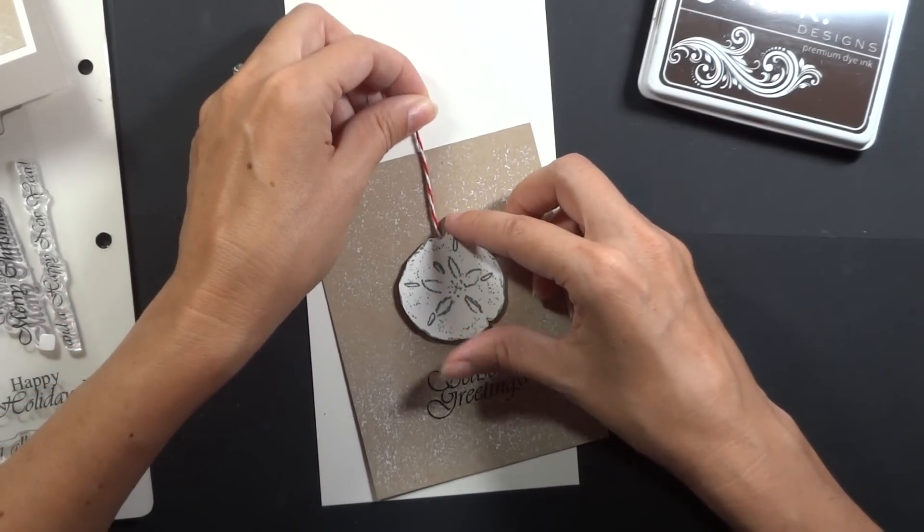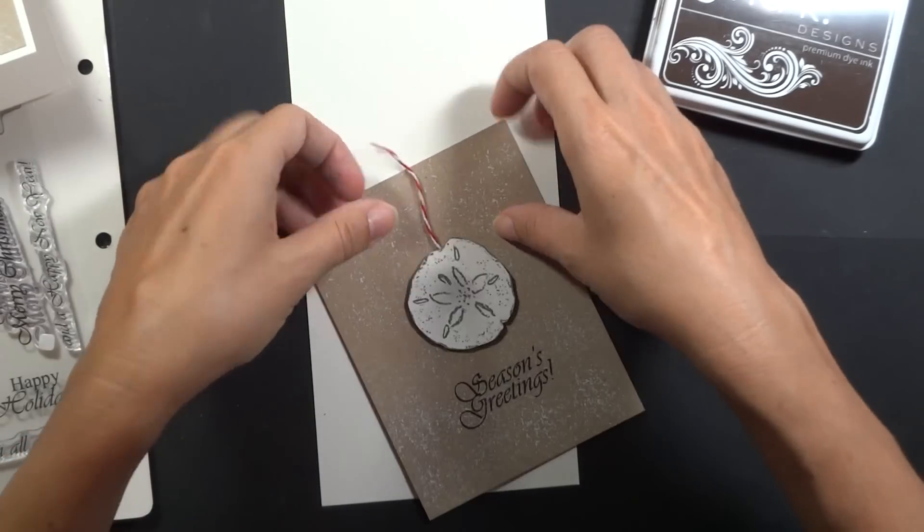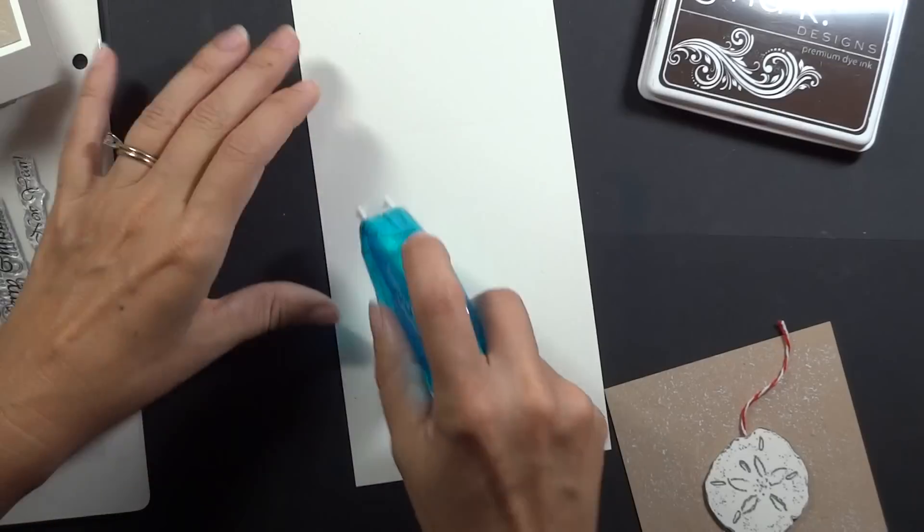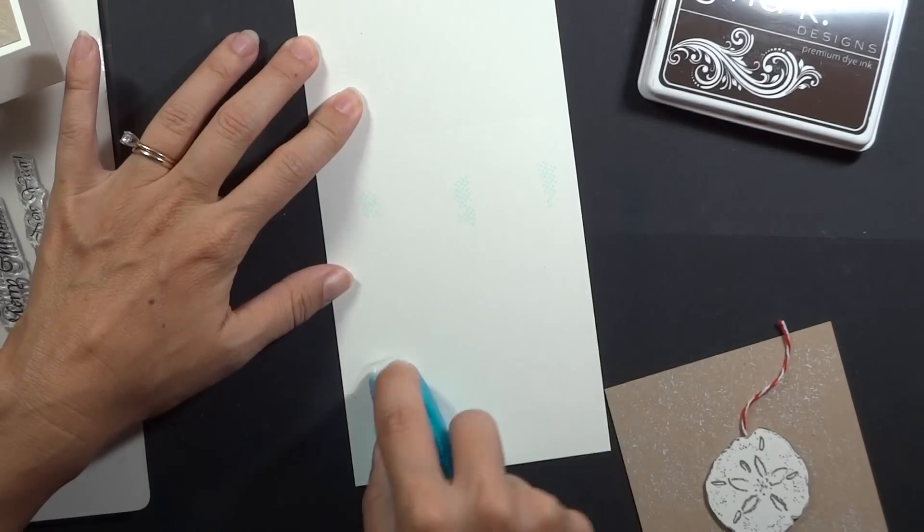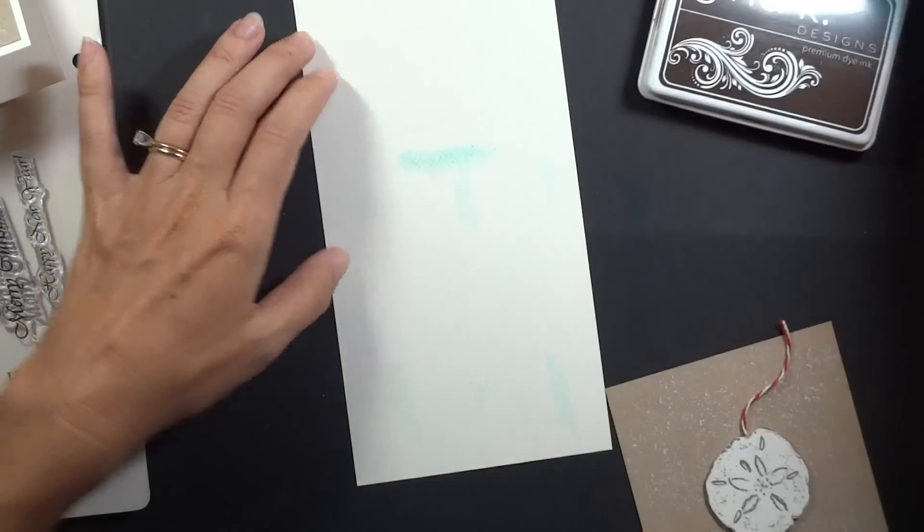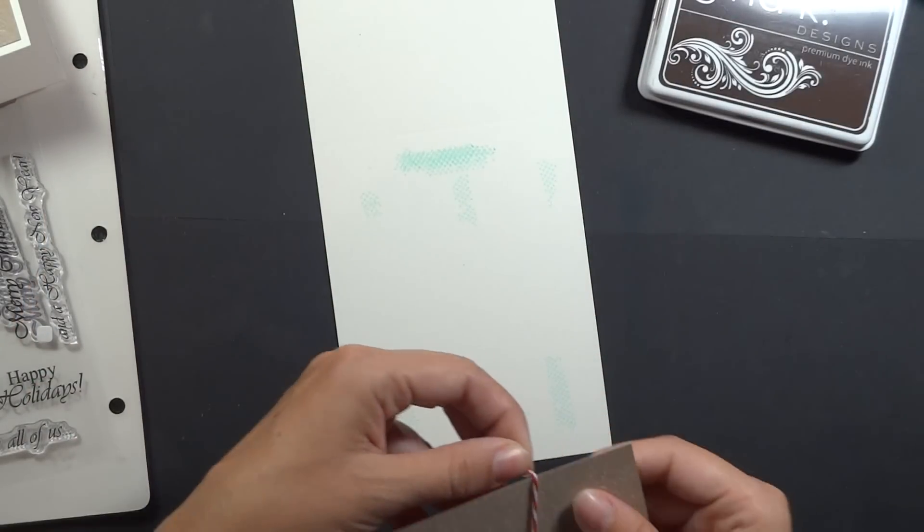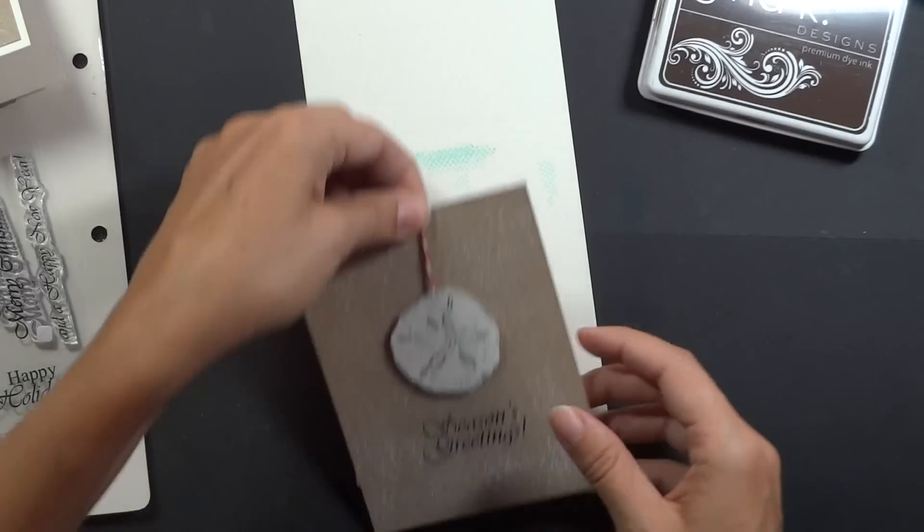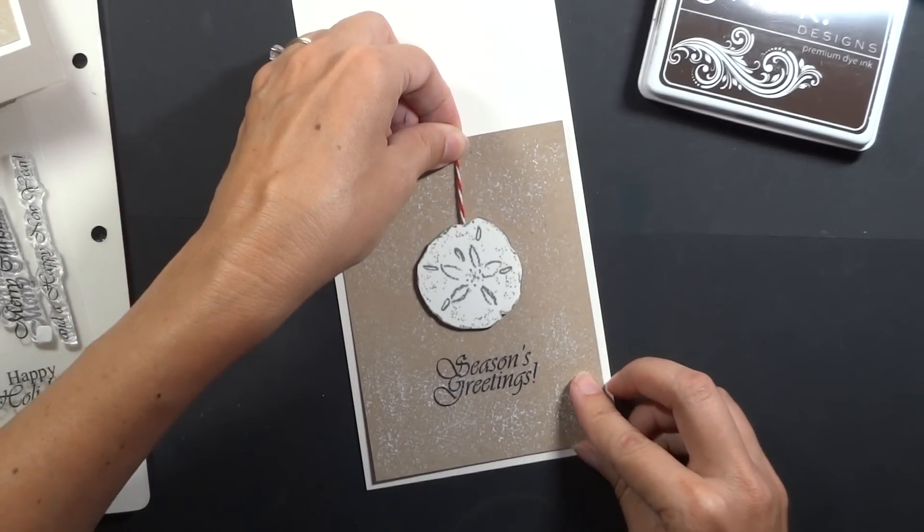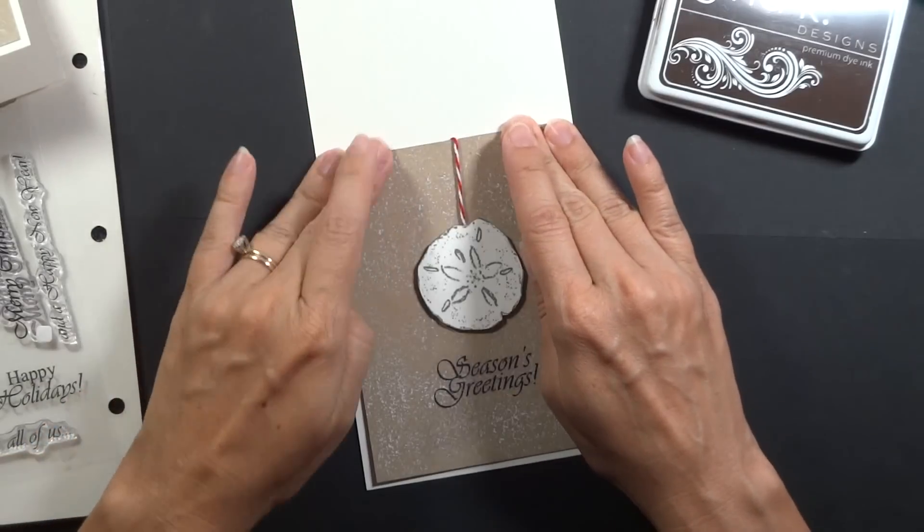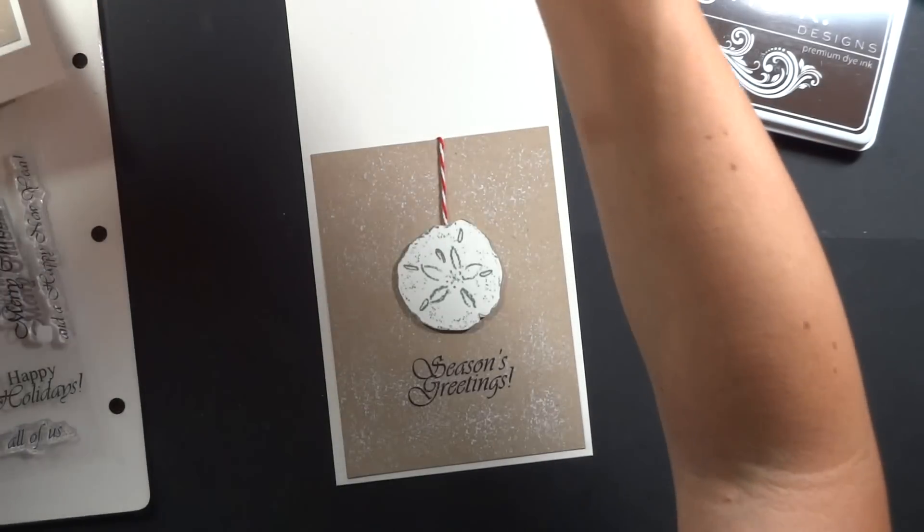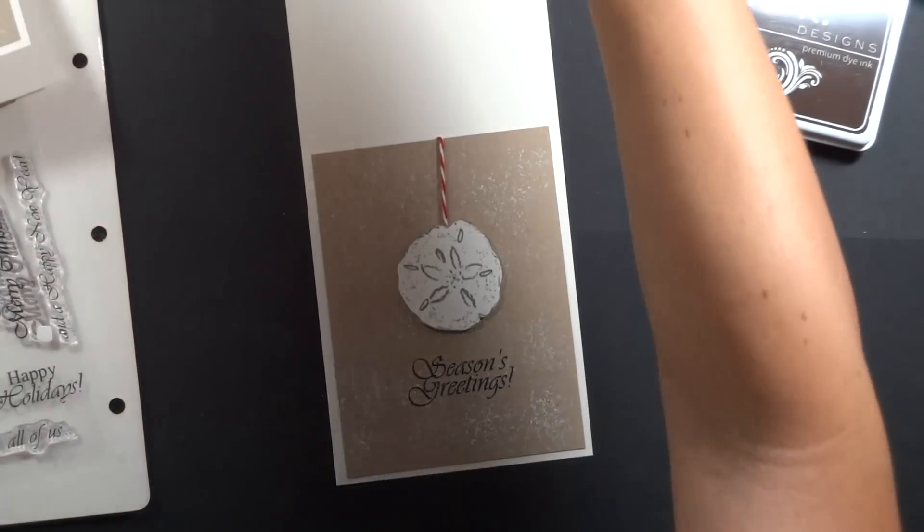At the bottom one and then have this loop up over the edge. So I'm going to put just a little bit of adhesive onto my base and then just some here that that string can grab onto. And then finally I'm going to take just a little piece of that coordinating embroidery floss and make a little bow around that. And that's it.